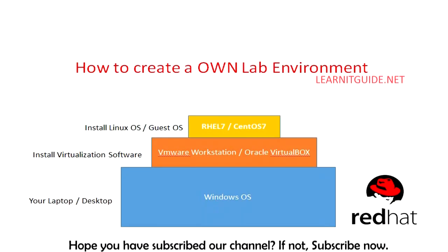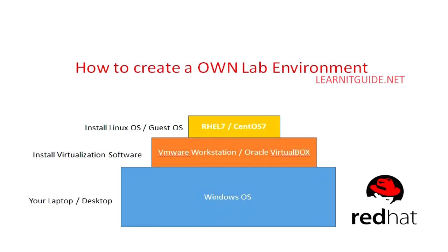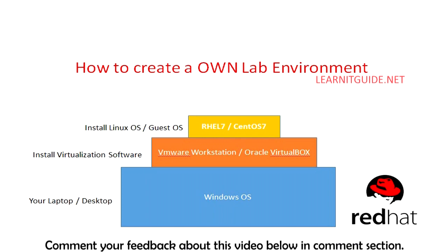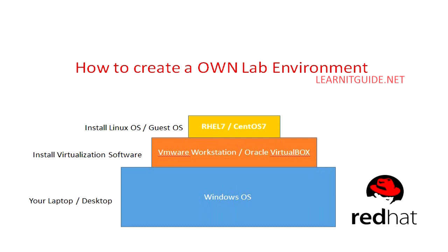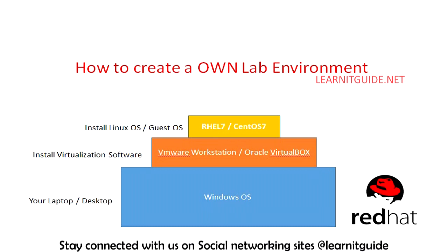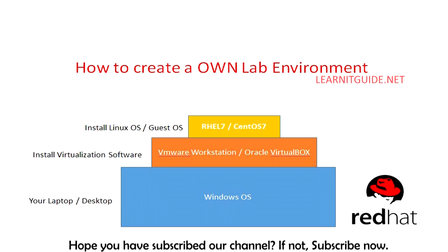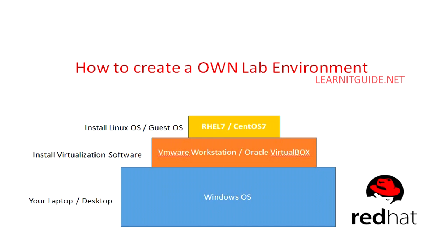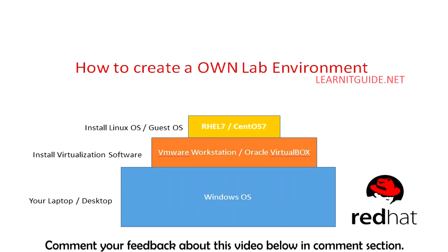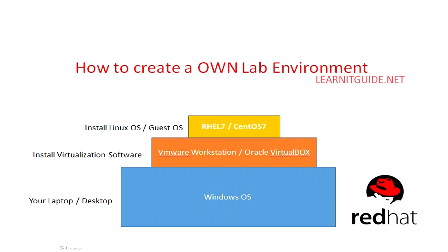This is how we create our own lab environment: you have a laptop or desktop with Windows OS installed. Download and install virtualization software — VMware Workstation or Oracle VirtualBox — and on top of that install the Linux OS. We cannot show the OS installation straight away without first understanding the file system architecture and standard partitions required, so after a few introductions to Linux OS we will show you how to install it.